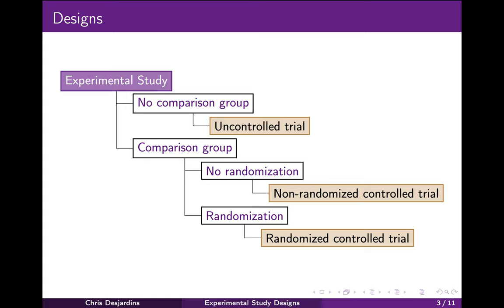Experimental studies, in contrast to observational studies, involve the investigator controlling some intervention, such as a treatment for the study participants. Examples of interventions of interest in medical or public health research include a new drug, a new surgical procedure, an education or counseling program, or an exercise program. The study participants are followed over time in order to determine the effect of the treatment on the disease or condition of interest.